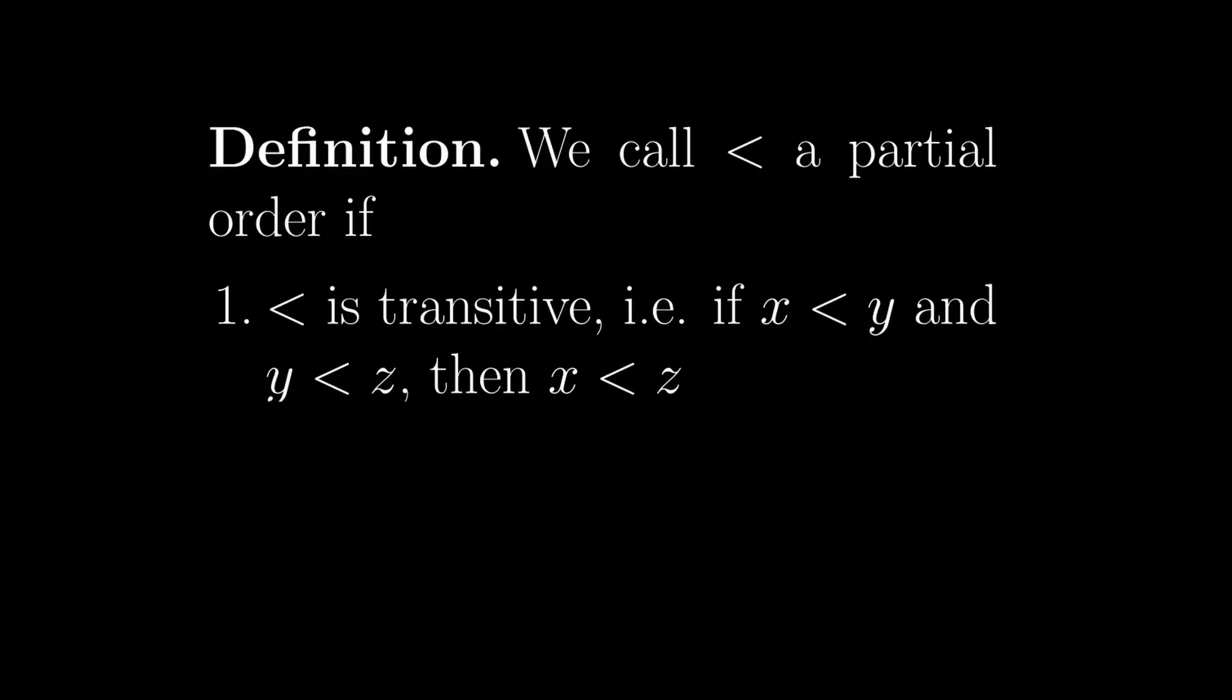Transitive means that if I rank x lower than y, and y lower than z, then x has to be lower than z. Second, it has to be antisymmetric, meaning that if x is lower than y, then y can't be lower than x.